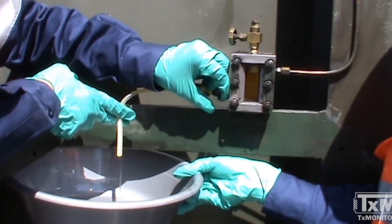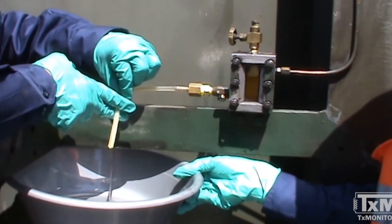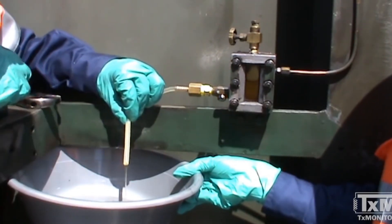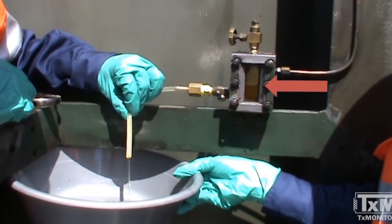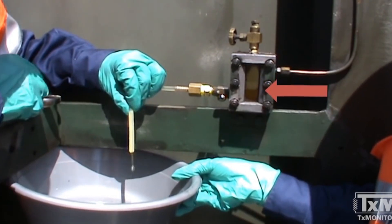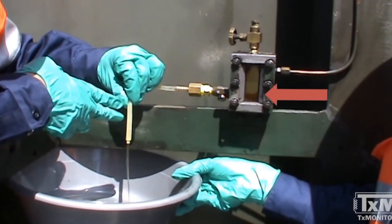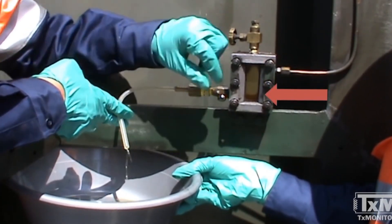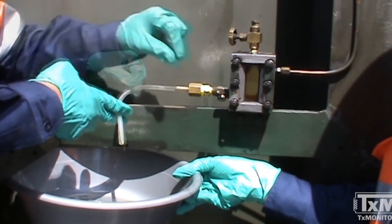Open the bottom port of the sampling device and allow the oil to drain. You will notice that the oil level in the sampling device decreases. Once the sampling device is full of gas, close the bottom port.